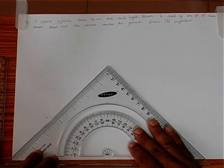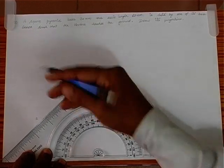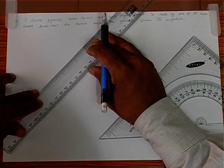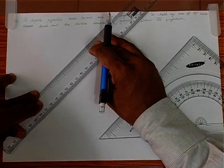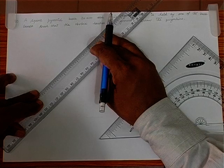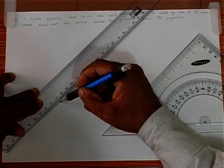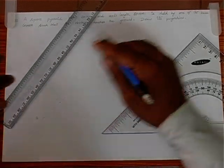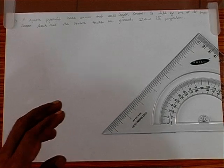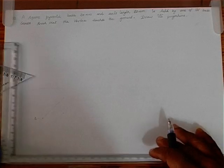Then we just draw a 45-degree line through this point. The base distance is given as 30 mm. We just take 30 mm on this line — so we have this 30 mm. Now we can just find the square pyramid; we can just duplicate this square pyramid.